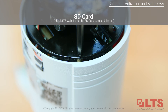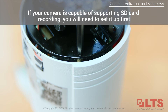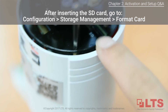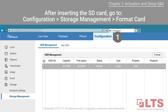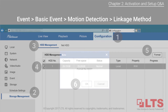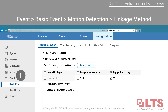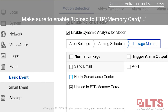SD card: please check the LTS website for the SD card compatibility list before using a card with the camera. If your camera has a built-in storage recording function, log into the camera to set it up. Insert the SD card, go to the configuration tab, navigate to storage management, and under HDD management select the SD card that appears and click format. Then go to the event tab, select basic event, motion detect, and under linkage method enable the upload to FTP memory card box.